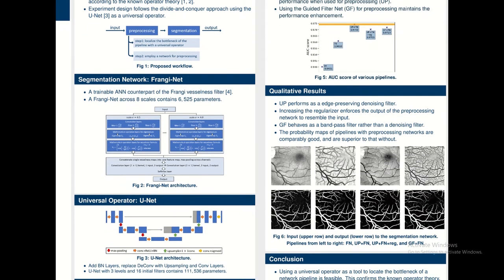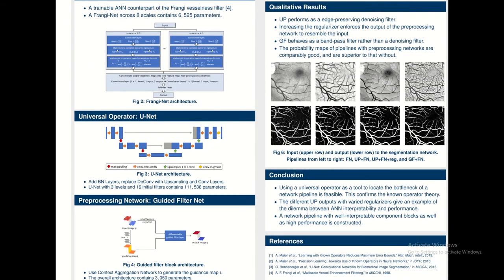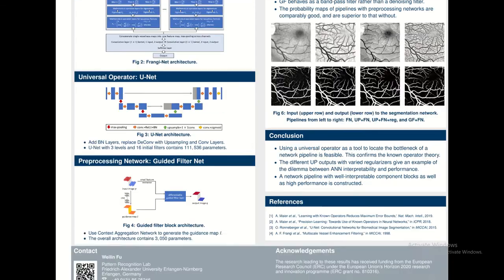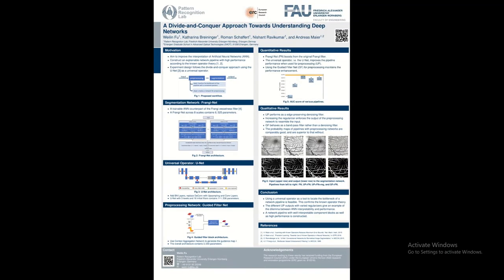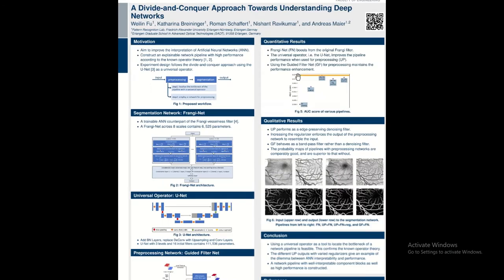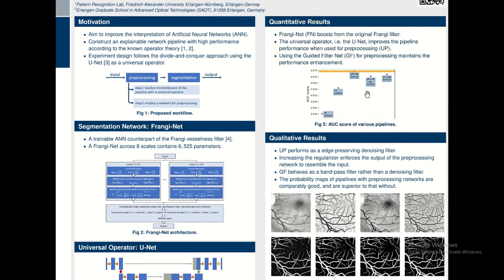Firstly, the Frangi-net is utilized as the segmentation module. Secondly, a modified U-Net is used as a universal operator to locate the preprocessing step as the bottleneck of the workflow. Finally, a guided filter-net is used as the preprocessing module. In this way, we arrive at a fully interpretable network pipeline.